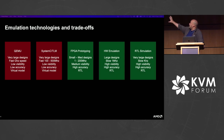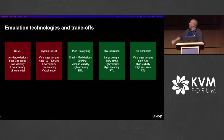RTL simulation is also a bit special — it can be quite fast for small designs but tends to slow down a lot as the design grows. So there's a clear spectrum from QEMU at one extreme to RTL simulation at the other, each with different trade-offs in speed, capacity, visibility, and accuracy.